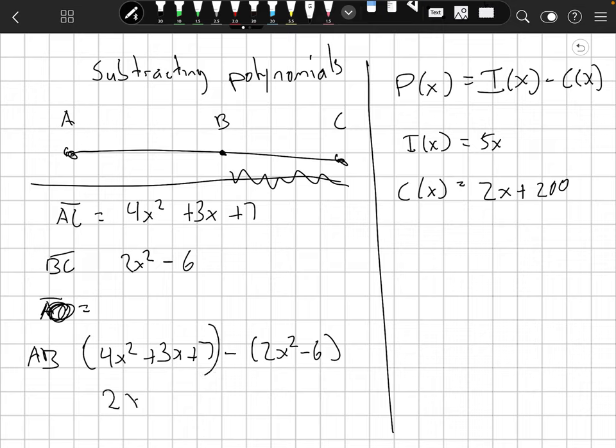So 4x squared minus 2x squared. That's 2x squared. And 3x minus. There's no x value to subtract. So plus 3x. And 7 minus negative 6. So 7 minus negative 6 is 13. Positive 13.